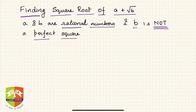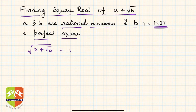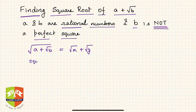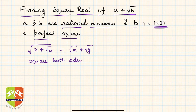So we want to find √(a + √b). We assume that √(a + √b) = √x + √y. It is natural to expect that the square root of a surd would be another surd. Now, to find x and y, we square both sides.